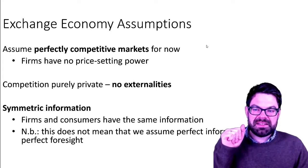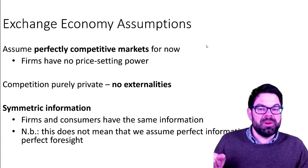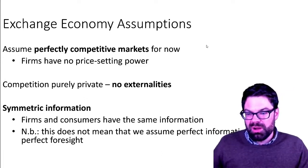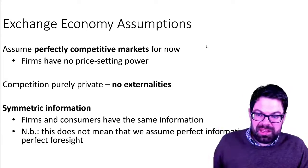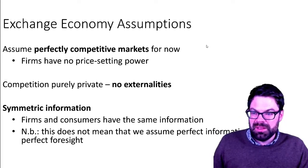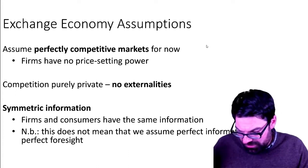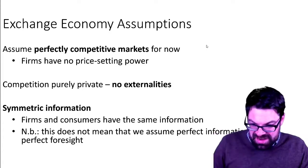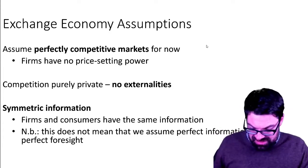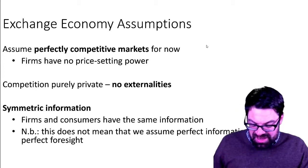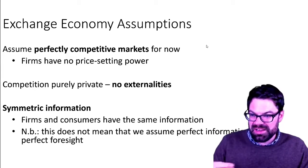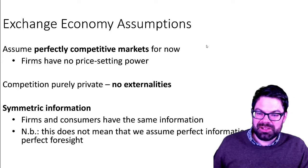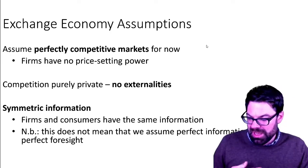What we assume is that firms have no price-setting power on these markets — they are price takers, so there is no monopoly power or oligopoly or anything like that. In fact, there aren't even firms that produce anything; there are just consumers who have an endowment and can exchange that endowment against other goods. In that sense, each consumer is a consumer and a firm at the same time.